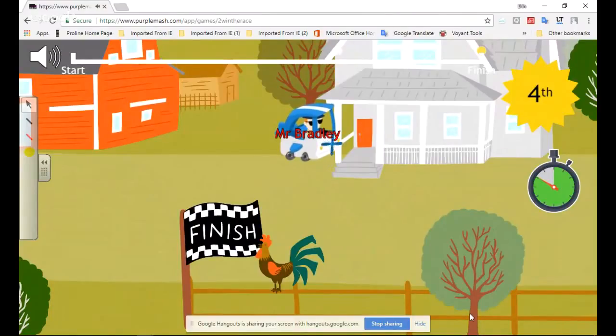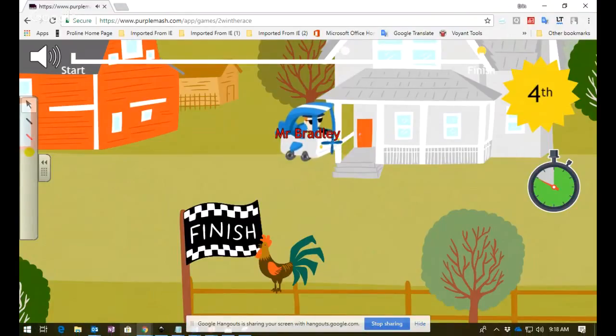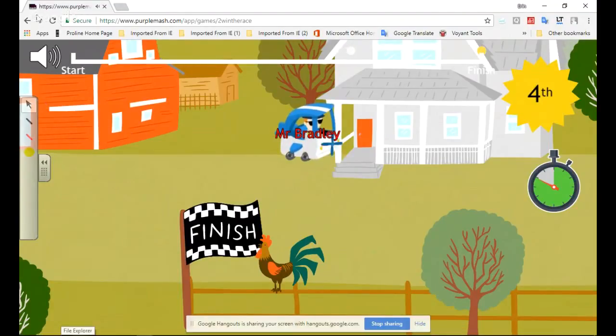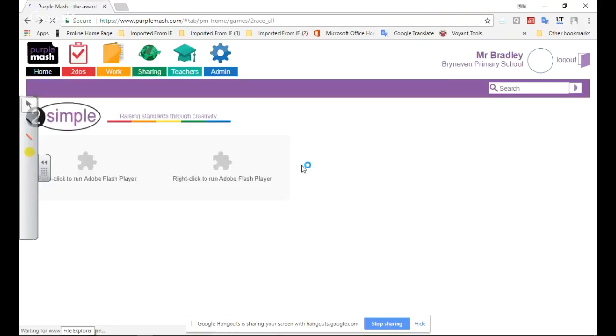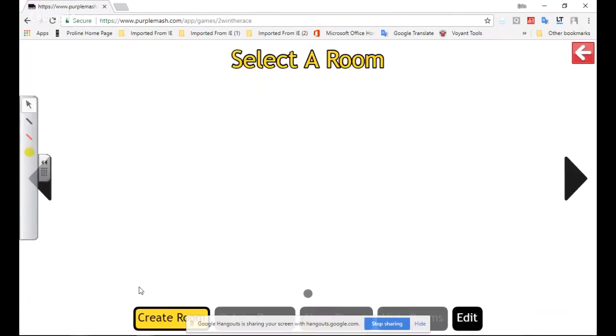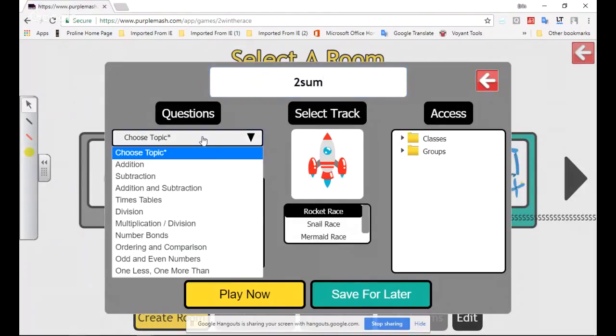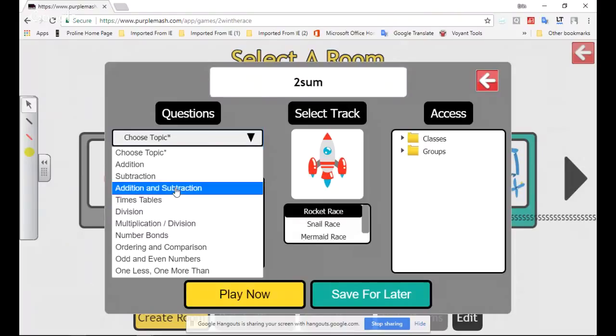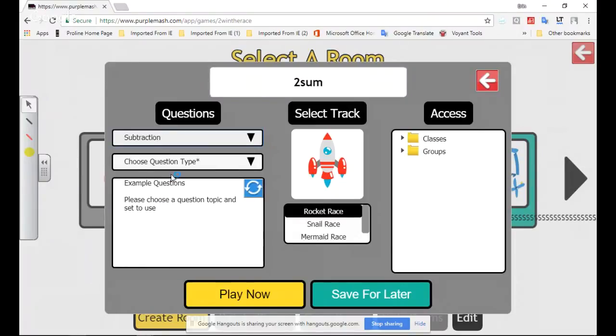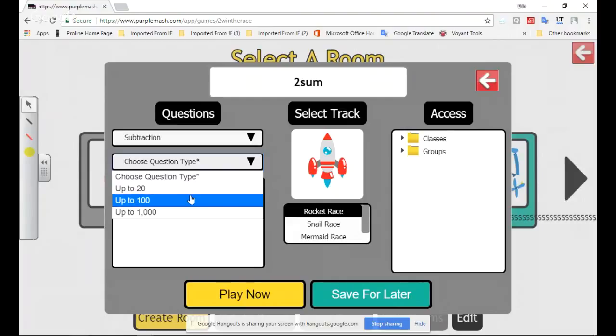And then we are going to create another room and go for another round. Here Tyrone is going to create a new room, so if I could ask everyone to please join the new room we're creating. It's going to be called 2Sum. It's going to be subtraction - yes, subtraction is a nice one. And I think let's do maybe a mermaid race.